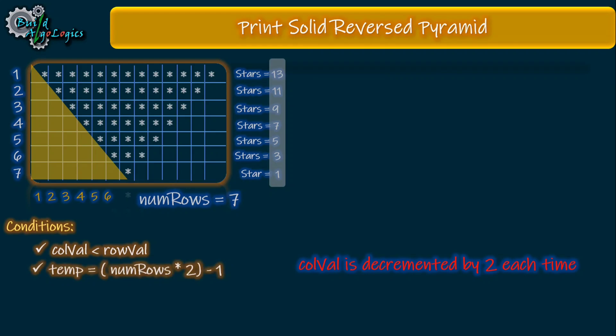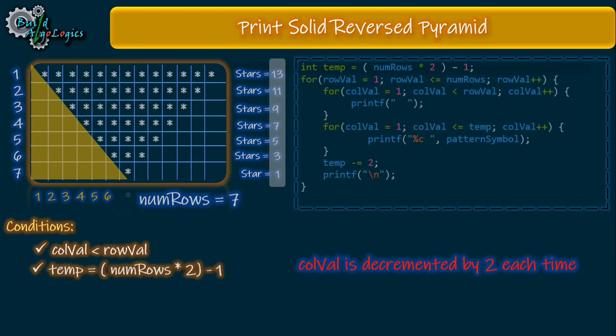For simplicity we'll use one extra temp variable and assign it this first value of row, which is 13. Now decrement this value by two for each row. We can write temp equals temp minus 2, or we can use this shorthand notation. That's it, now this loop will print stars as we need.